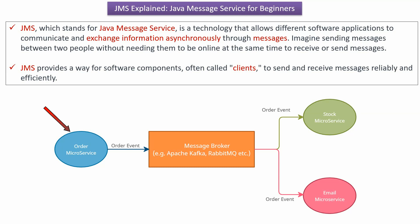Here you can see an order microservice which creates or produces an order event and sends it to the message broker. The message broker can be Apache Kafka or RabbitMQ, and these order events will be queued in the message broker. Here you can see a stock microservice and email microservice which will consume these order events from the message broker.